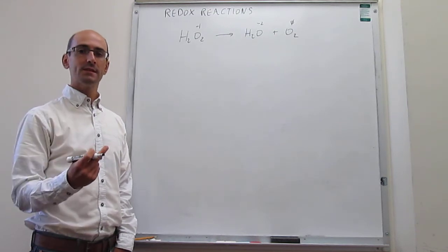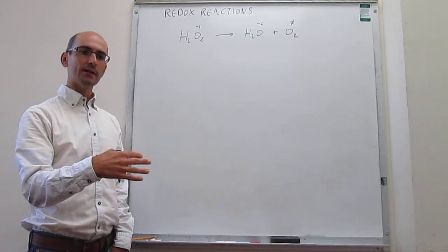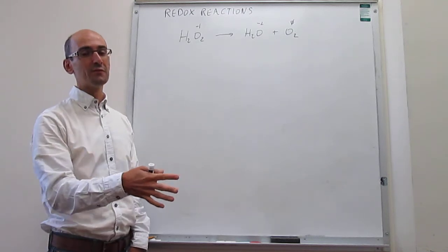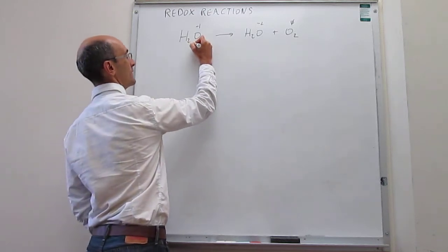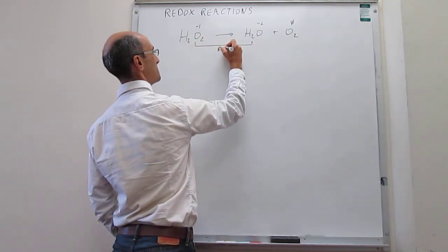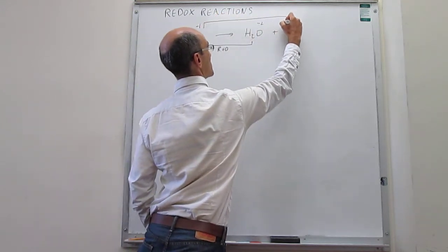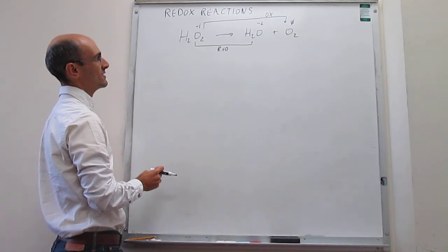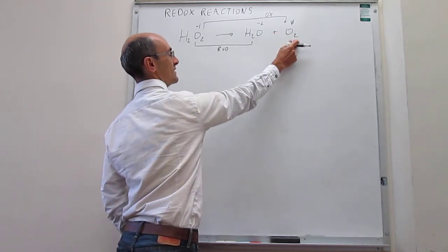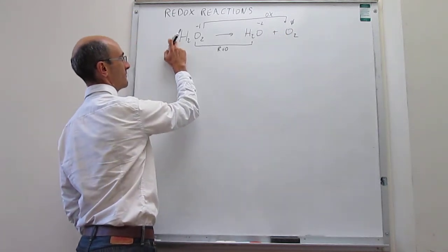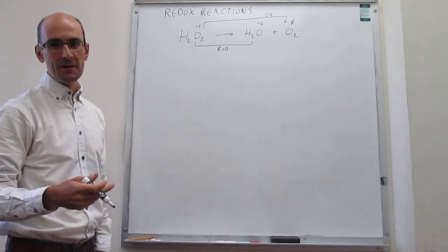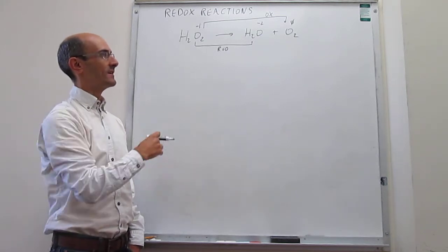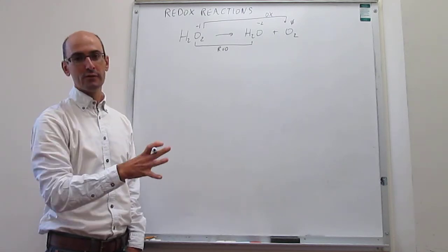You have one species that reacts to generate two different species, and one atom in the reagent goes to two different products with different oxidation states. This is actually a really easy reaction to balance without the half-reaction method — you simply halve the oxygen, giving one half O₂, or multiply everything by two to get two H₂O₂ → two H₂O + O₂. But it's a good opportunity to verify that the half-reaction method still works.